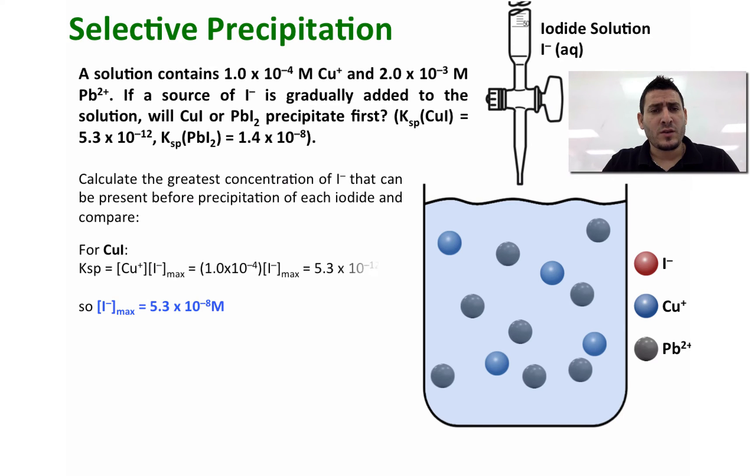If we take a look for the copper iodide, the maximum concentration of I minus before any precipitation can be 5.3 times 10 to the power minus 8 molar. This can be calculated from the KSP as you can see here.